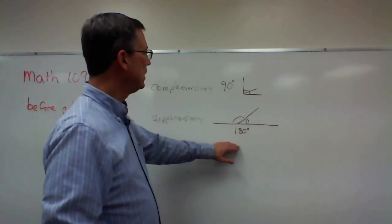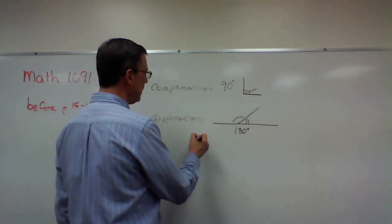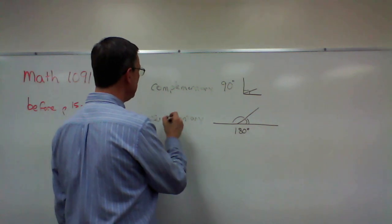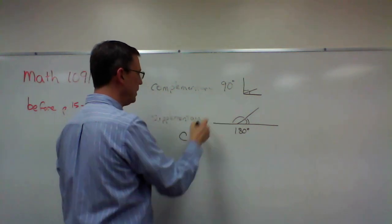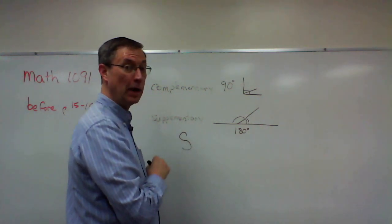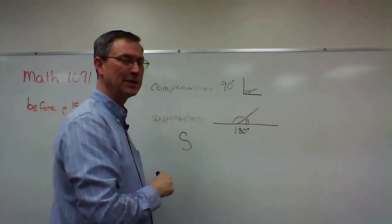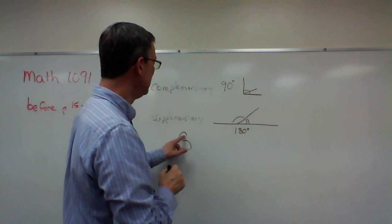And supplementary is double that—180 is double the 90. Sometimes, I don't know if this helps students or not, but it helps me keep it straight. C—one loop—corresponds to 90, and if I put another loop underneath it, another 90, you see how that kind of forms an S to be double the C. So an S is a double C.